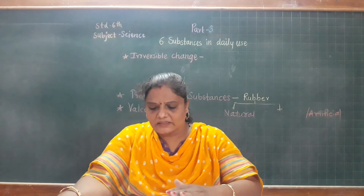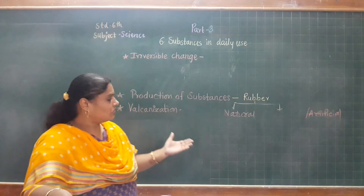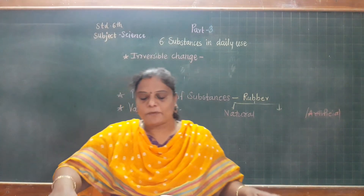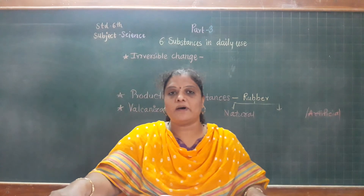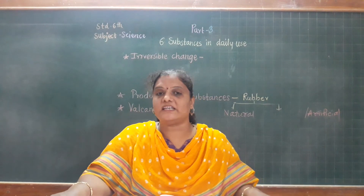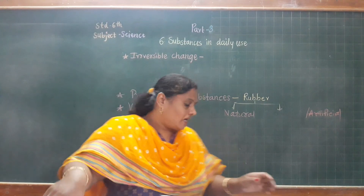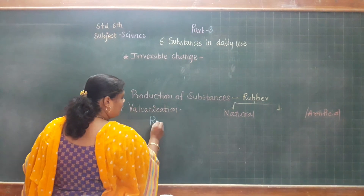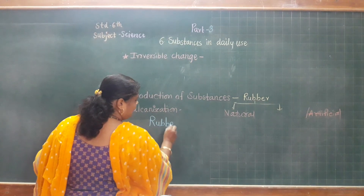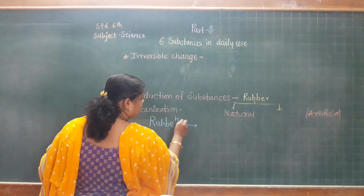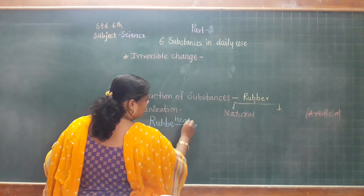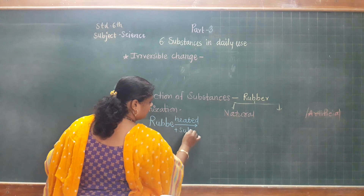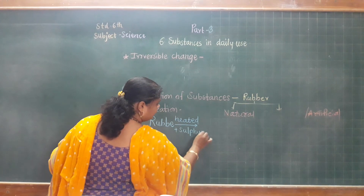The process is called the vulcanization of rubber. Vulcanization is a process in which rubber is heated with sulfur. Rubber is heated with sulfur to change its properties.